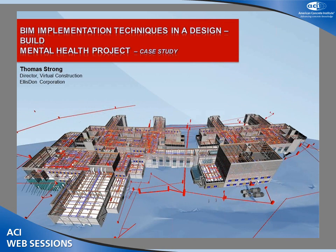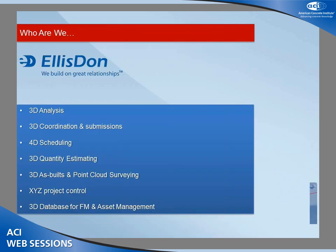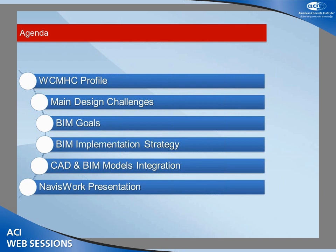I'm Tom Strong. I run the virtual construction group at Ellis Don — we're about 30 people. Ellis Don is a big general contractor in the Canadian market; we do about $3.5 billion in construction per year. We started the virtual construction group about five years ago. Our strategy is basically to deploy individuals to project sites where they collect 3D models from consultants if possible, and also collect models as submissions from subcontractors. We're making sure all the systems in the building are fully coordinated before we hit the job site. Today I'm going to talk about one of our P3 projects — the Waypoint Mental Health Facility — covering the goals, what we did, who participated, and the results.